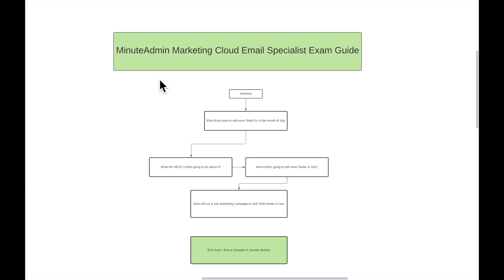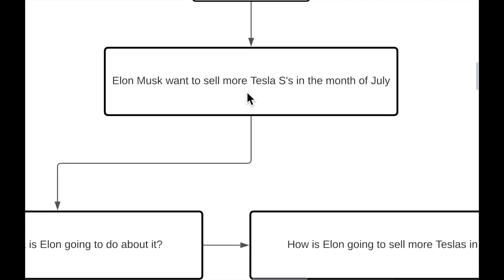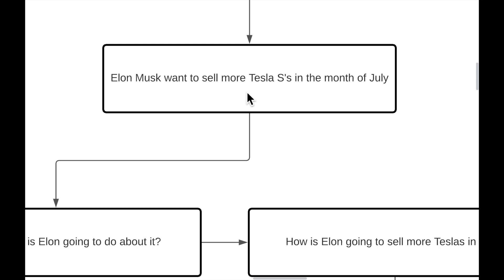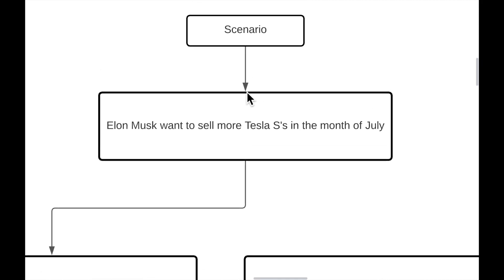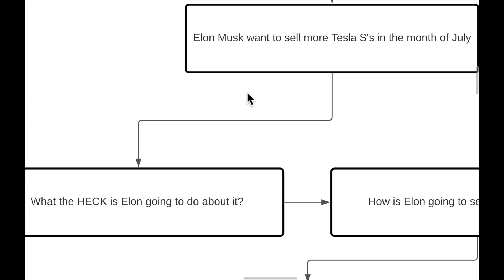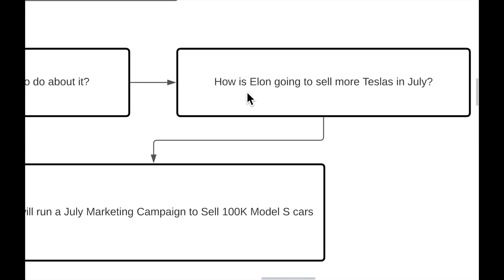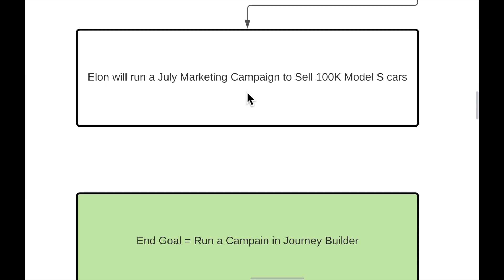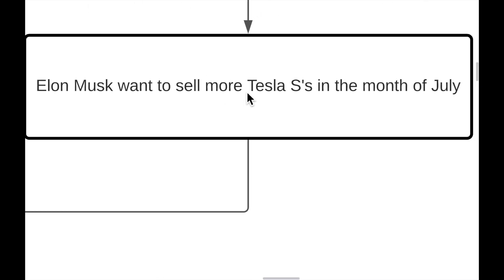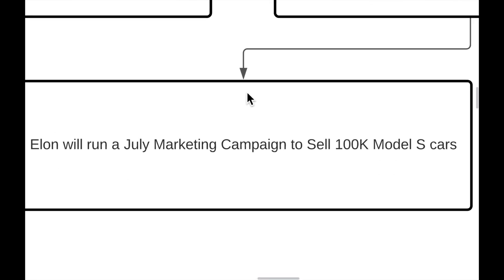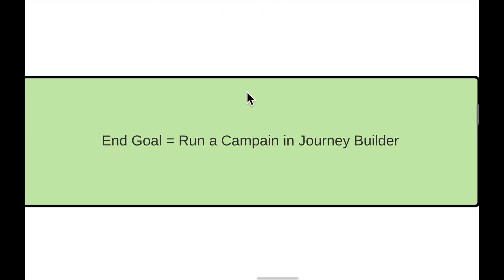I've broken this exam down into a real-world use case scenario. Let's say Elon Musk — CEO and founder of Tesla and SpaceX — wants to sell more Tesla Model S's in the month of July. What is Elon going to do about that? He's going to run a July marketing campaign to sell 100,000 Model S cars. The end goal is that in Marketing Cloud, Elon is going to run a campaign in Journey Builder.